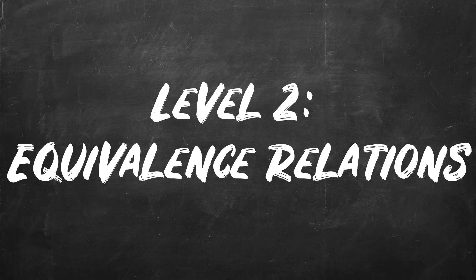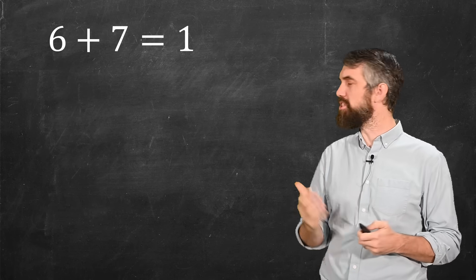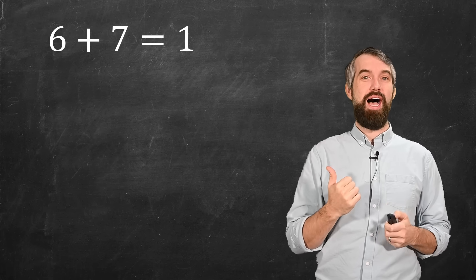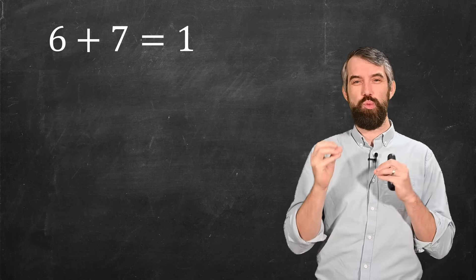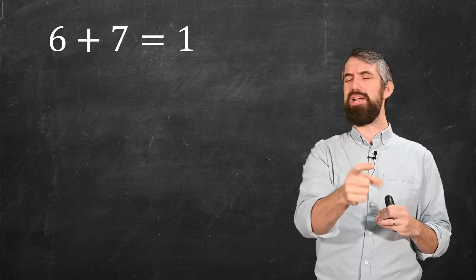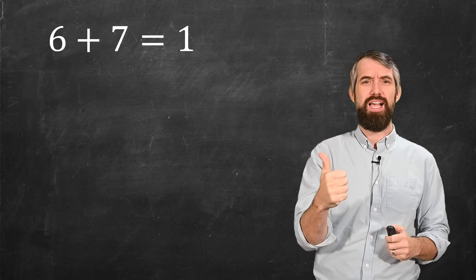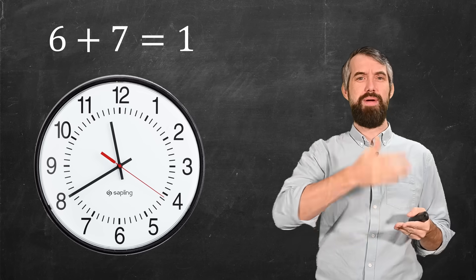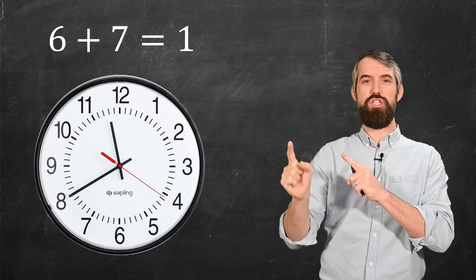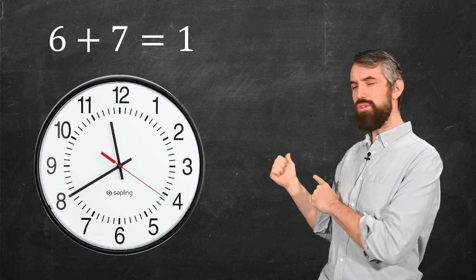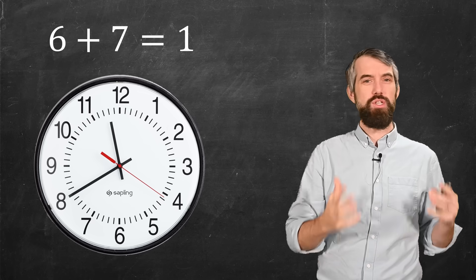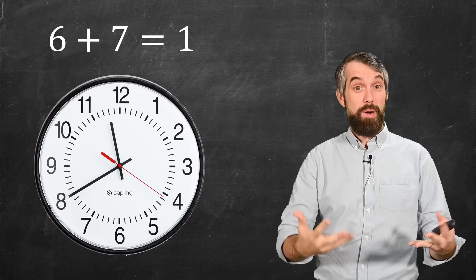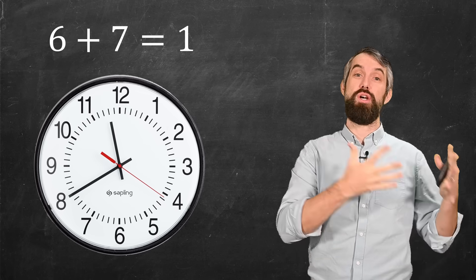For level 2, I want to talk about equivalence relations. Let me start with this equation: 6 plus 7 equals 1, which you're probably thinking is ridiculous, until I put up a picture of a clock. And as soon as I do that, if it's 6 o'clock and you add 7 hours, you would get to 1 o'clock. And so you'd probably agree. So what's going on here? Well, this represents modular arithmetic.